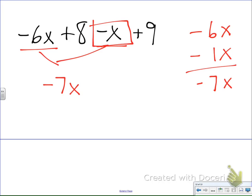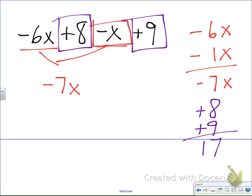Now I want to look at what I have left. I have a positive 8 and a positive 9. Great, that's just 8 plus 9. Positive 8, positive 9. We add those together for 17.